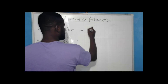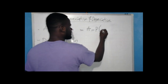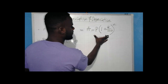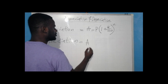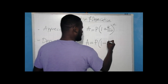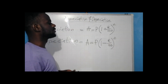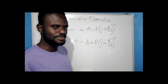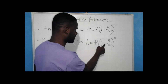Appreciation can be represented as: New Value = Initial Value × (1 + Rate) raised to the period of appreciation. And depreciation can be represented as: New Value = Initial Value × (1 − Rate) raised to the duration of depreciation. Remember, the difference between appreciation and depreciation is just a simple sign — in appreciation there is an addition sign, and in depreciation there is a subtraction sign.